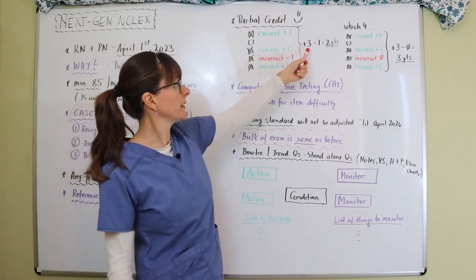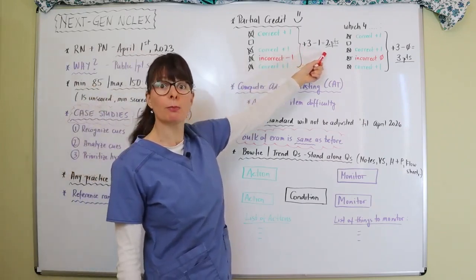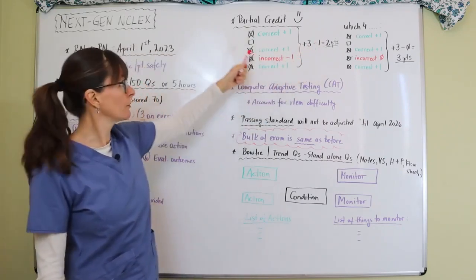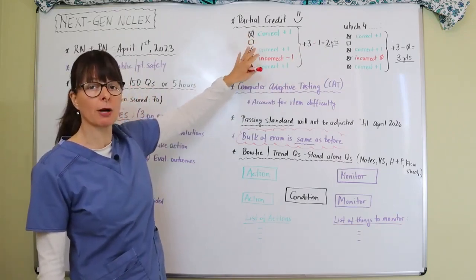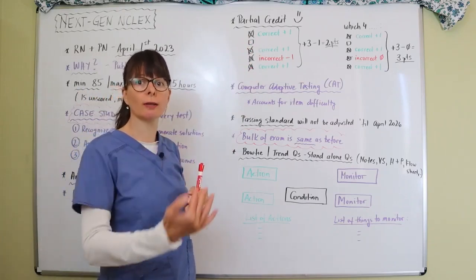So for the three correct ones you get three plus points, and then for the incorrect one you get a minus point, meaning that you end up with two points, where previously if you would have scored like this it would have been zero points.